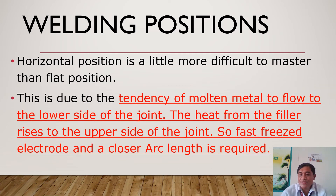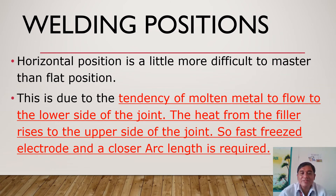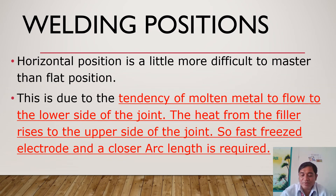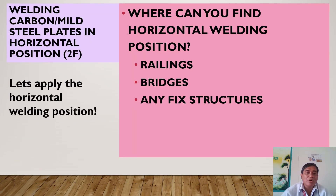This is due to the tendency of the molten metal to flow to the lower side of the joint, while heat from the filler rises to the upper side. Because of gravity, there is a tendency for the molten metal to drop. To address this, we need a fast-freeze electrode and a closer arc length is required to achieve a good welding outcome in horizontal position.